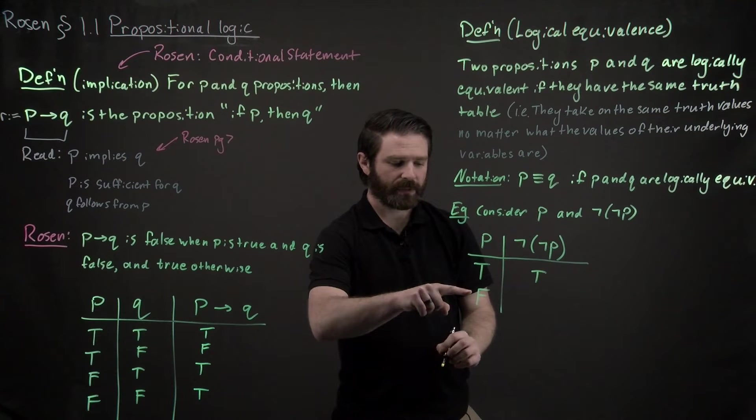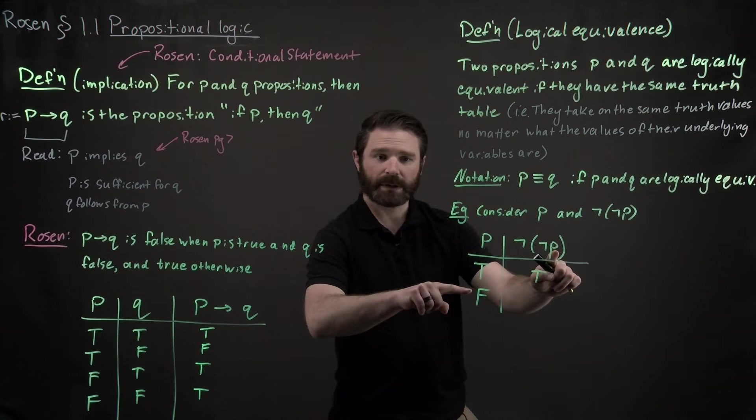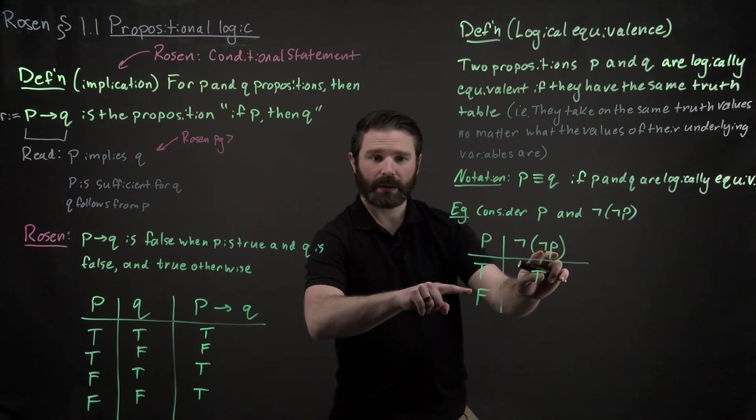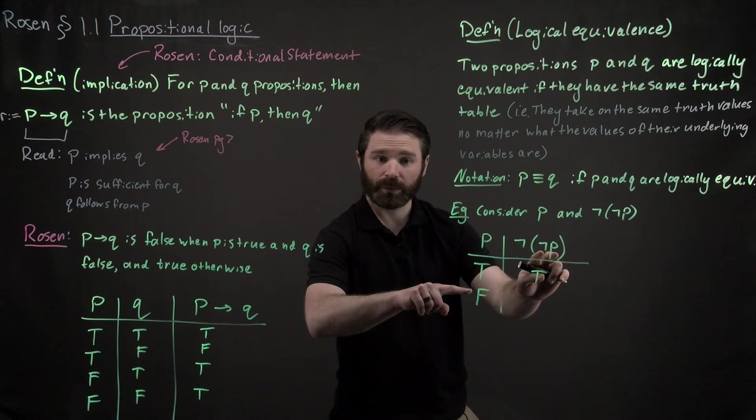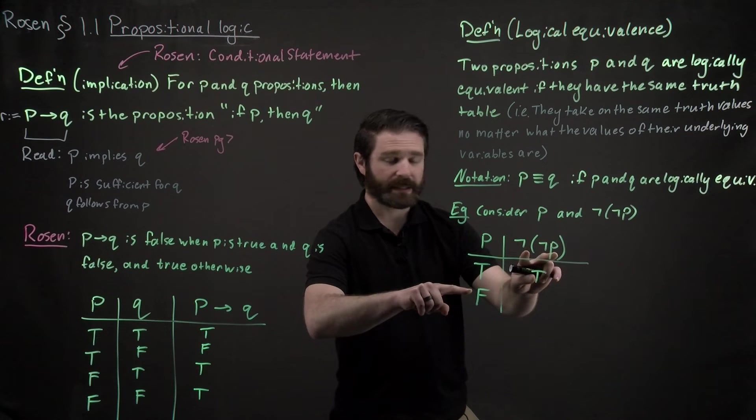And if we look at this row right here, well, if P is false, so P is false, then not P right here is going to be true. And this not is going to flip it again and it's going to become false again.